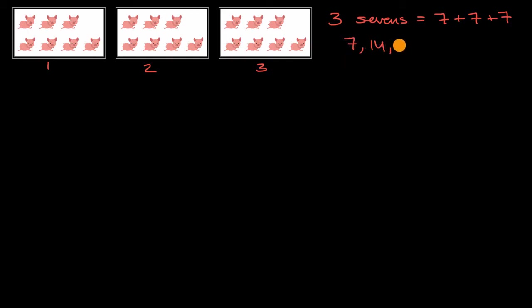So if I said, what's the total number of running pigs that I'm dealing with? Well, I have three sevens — three groups of seven. And so that's the same thing as seven plus seven plus seven. If you wanted to figure out what that is, you could skip count. If we skip count by seven, we go seven, then 14, then 21. So three sevens, which is seven plus seven plus seven, is 21.